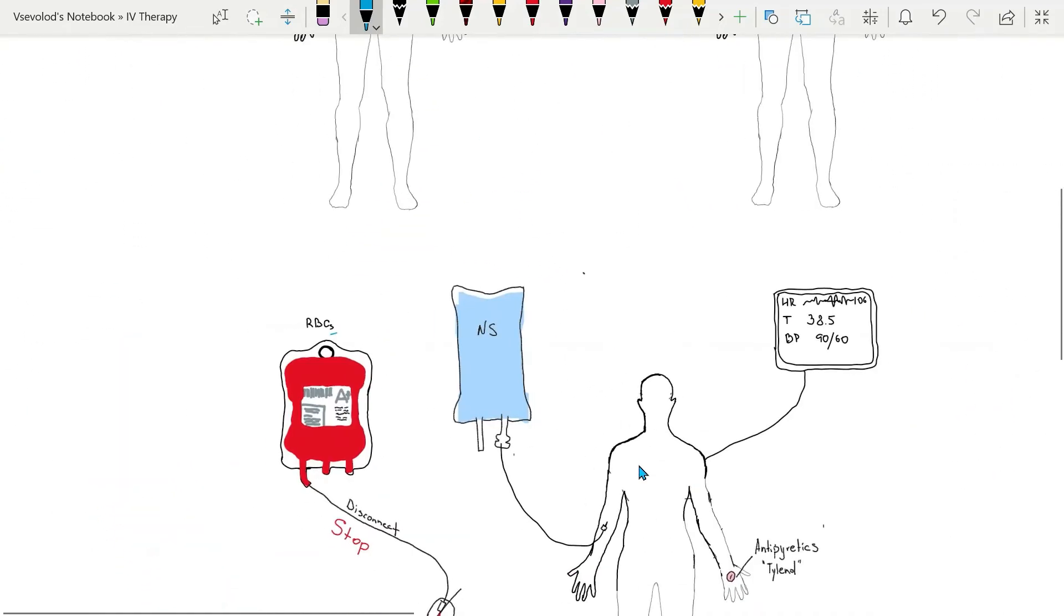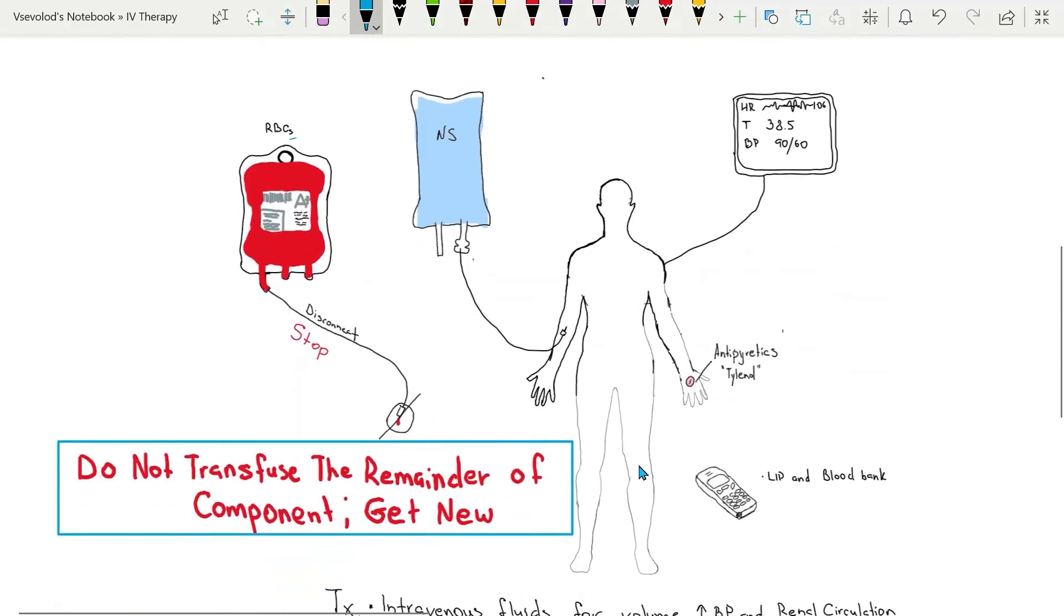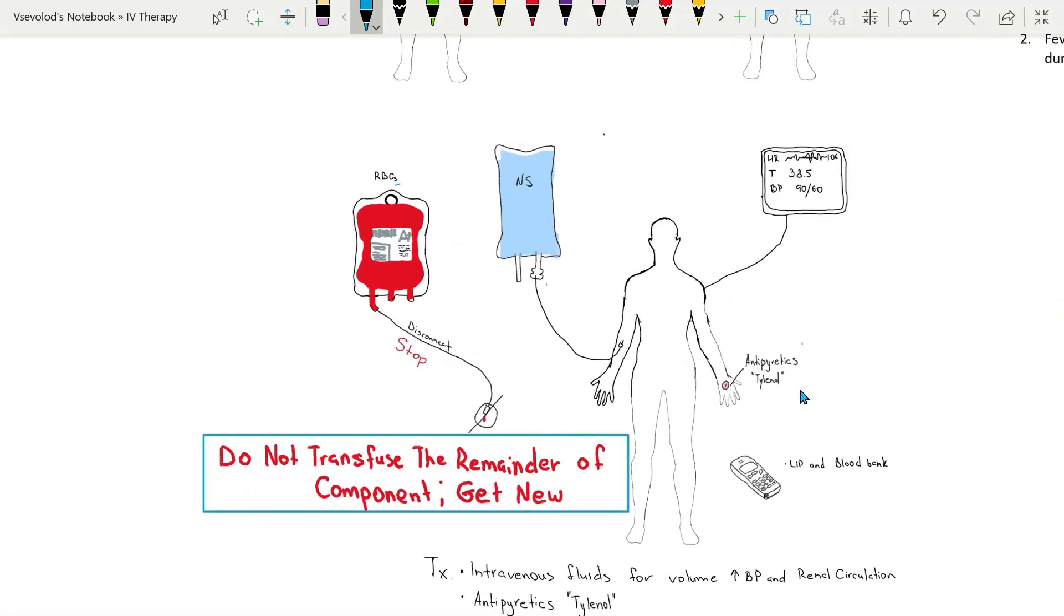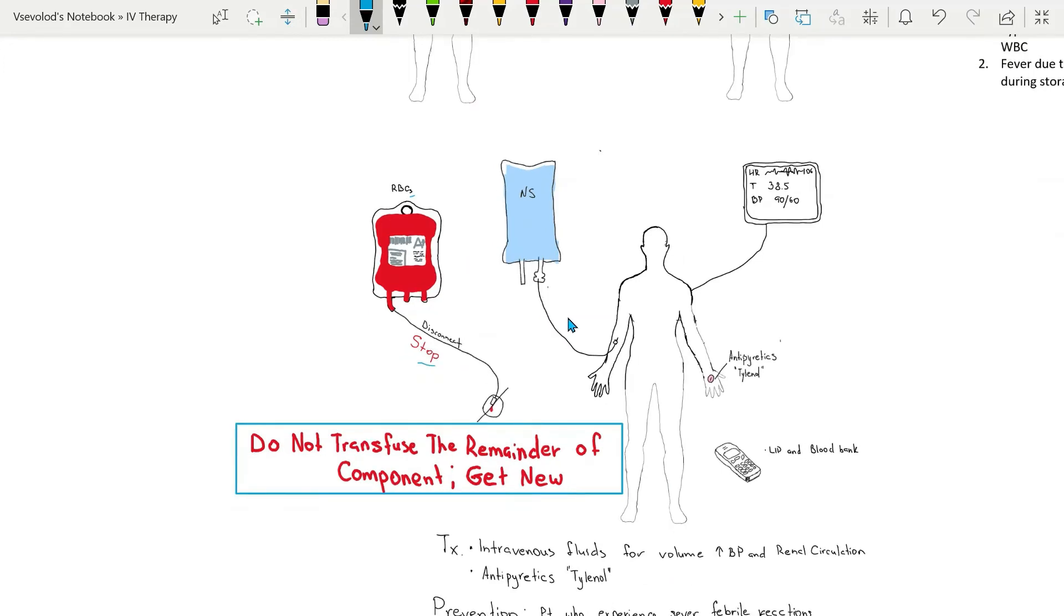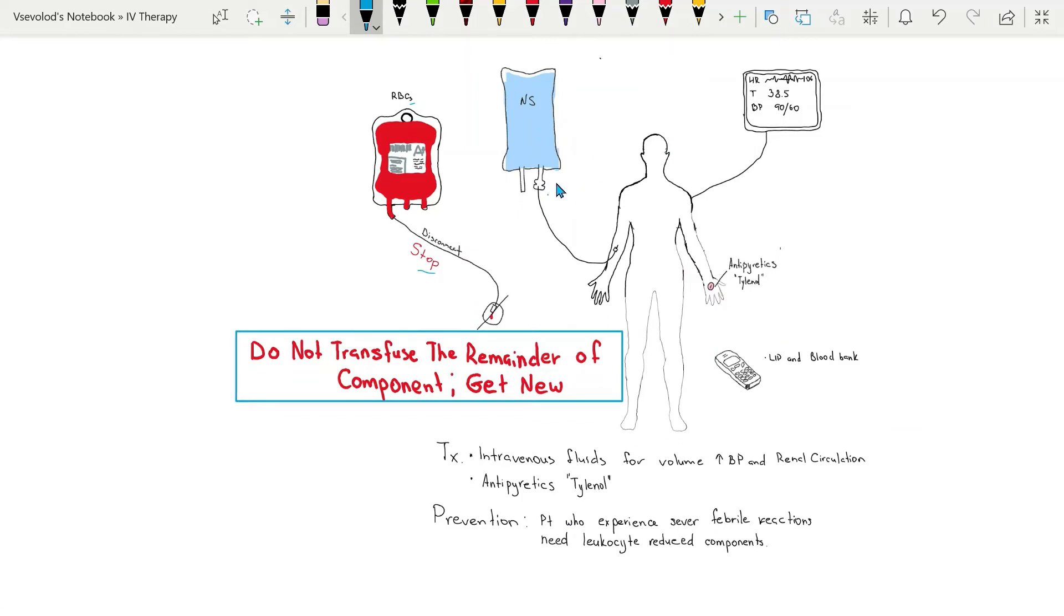So now let's take a look at interventions that can be done for febrile non-hemolytic transfusion reaction. We will stop the transfusion and initiate a transfusion reaction workup. We'll change the administration set and administer through the new line 0.9% sodium chloride to keep the vein open. We'll notify the licensed independent practitioner and the blood bank and institute transfusion reaction protocol. We'll monitor vital signs.